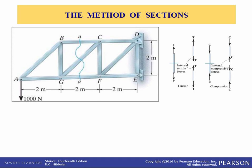When we need to find the force in only a few members of a truss, we can analyze the truss using the method of sections. It is based on the principle that if the truss is in equilibrium, then any segment of the truss is also in equilibrium. For example, consider these two truss members. If the forces within the members are to be determined, then an imaginary cut indicated by the blue line can be used to cut each member into two parts, and thereby expose each internal force as external to the free body diagram shown on the right. Clearly, equilibrium requires that the member in tension be subjected to a pull, whereas the member in compression is subjected to a push.